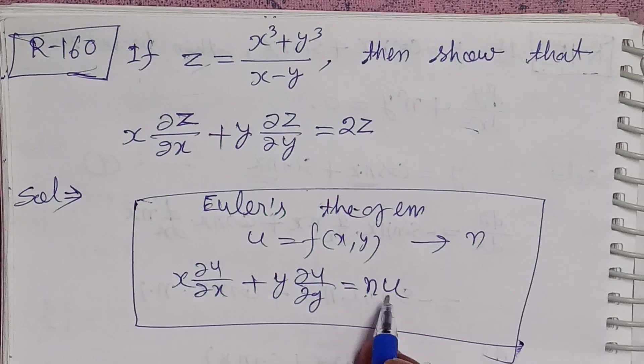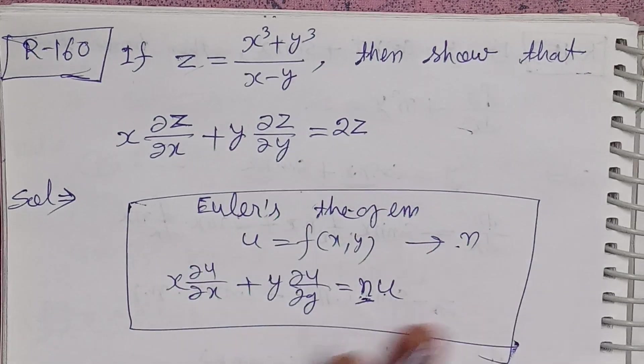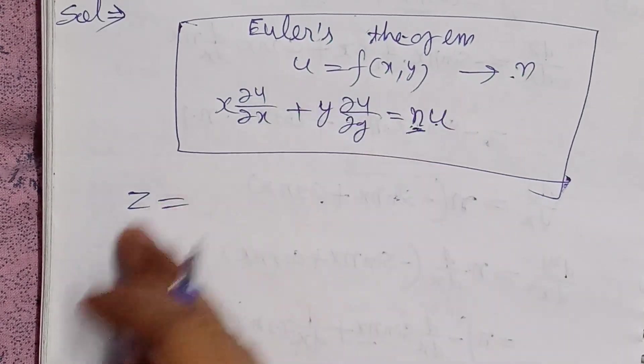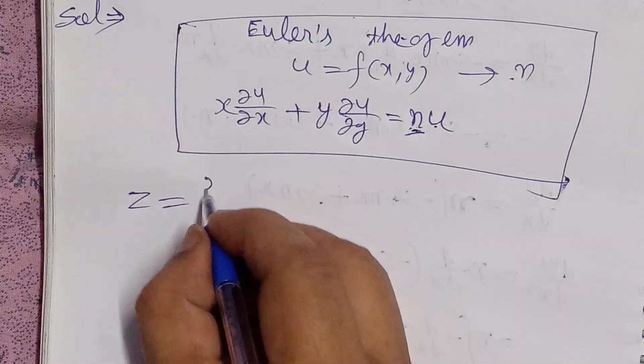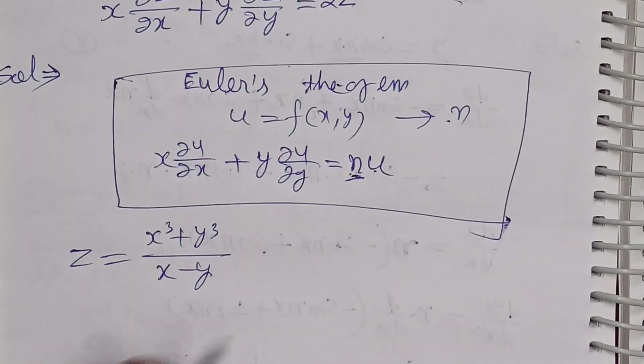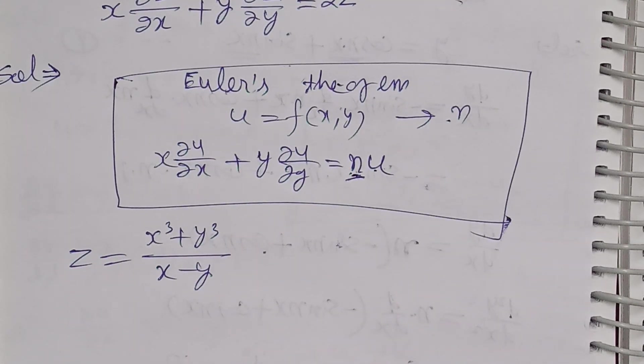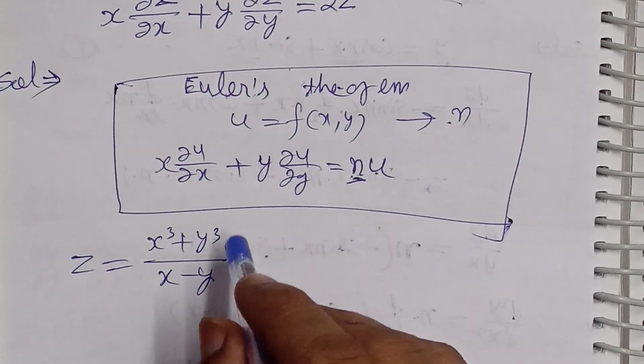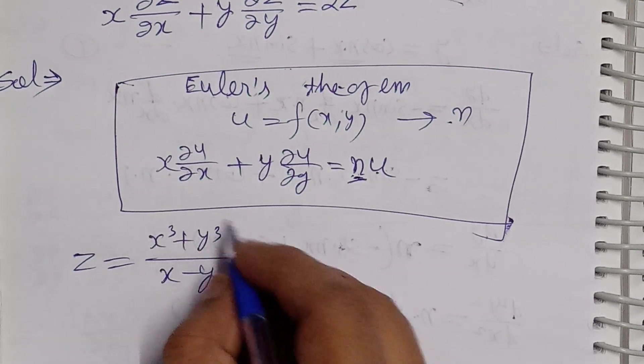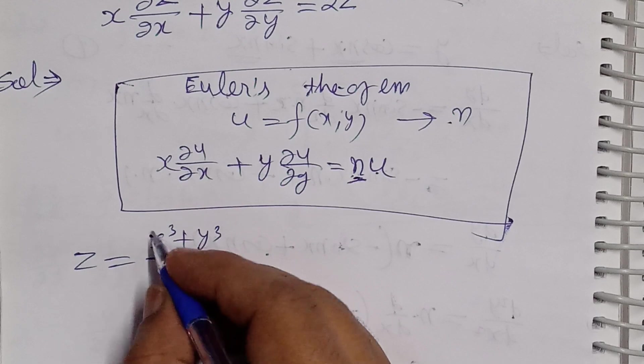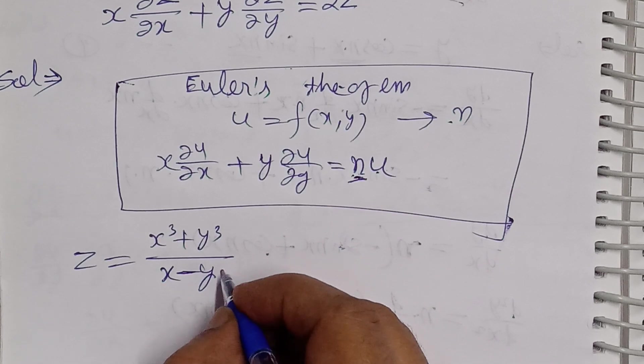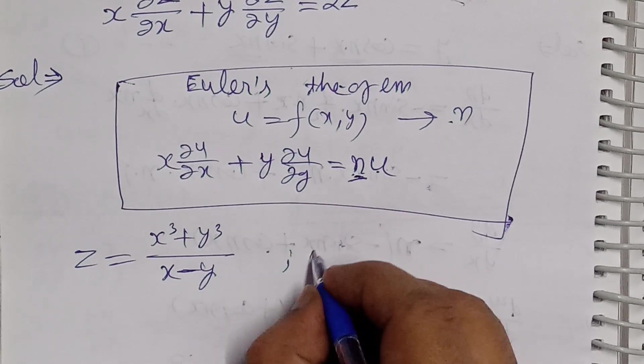Now let's see how to find the degree n value in this question. Here z is our u from Euler's theorem, so z equals x cubed plus y cubed upon x minus y. First we need to check if this z function is a homogeneous function of x and y. We check if the power of x and y in the numerator matches the denominator - both terms have power 1, so this is homogeneous.